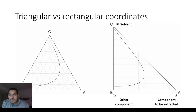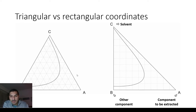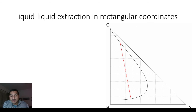We're still talking about liquid-liquid extraction. Last time we talked about the phase diagrams and the coordinate system. We said we are going to use rectangular coordinates because it makes it easy to extract and put data on the diagram. For the triangular coordinates, this corner C represents the solvent, B represents the component I want in pure form, and A is the impurity I want to extract.